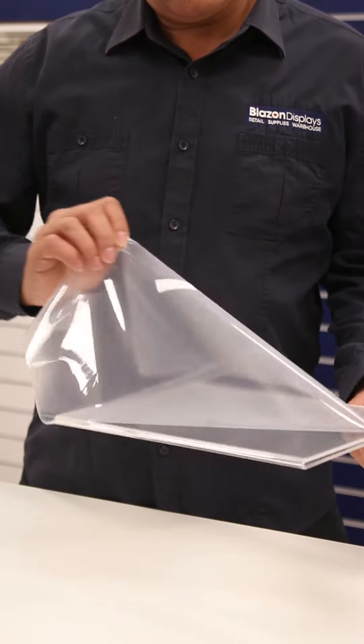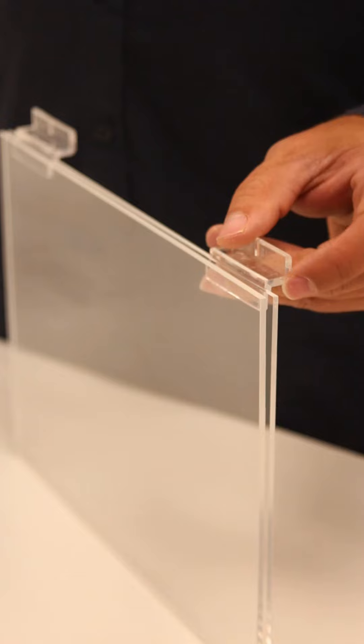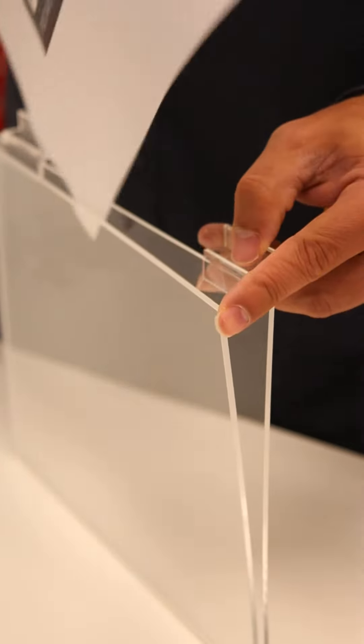The slat wall sign holders are similar. They come with a protective coating so don't forget to peel those off. They do come with little slat wall hooks there to fit into the slat wall.